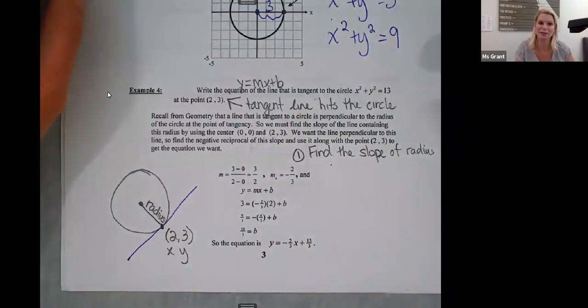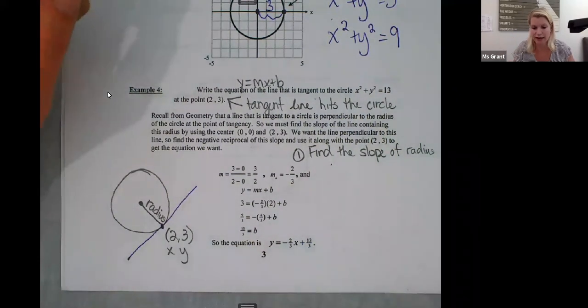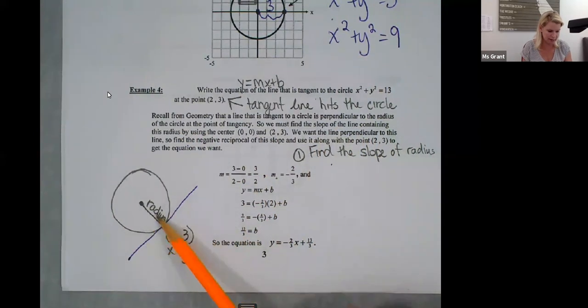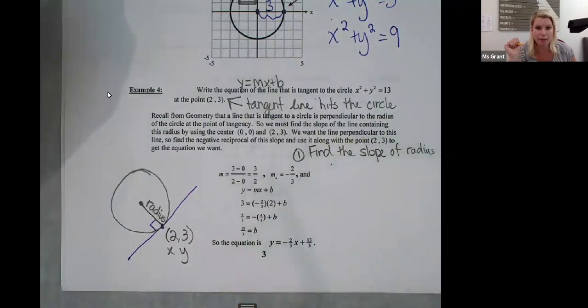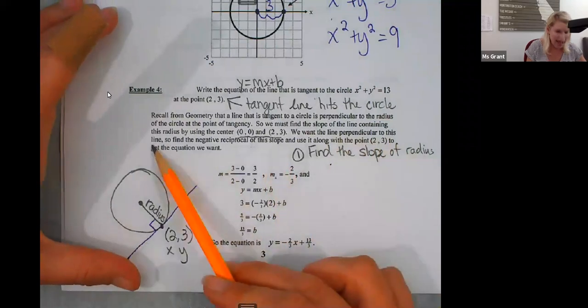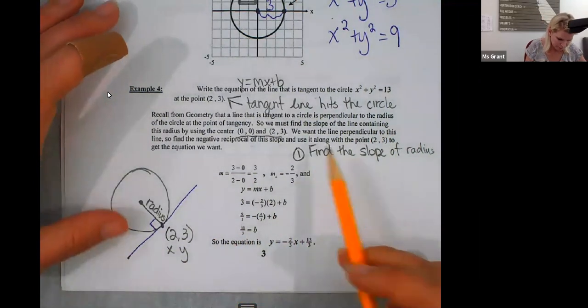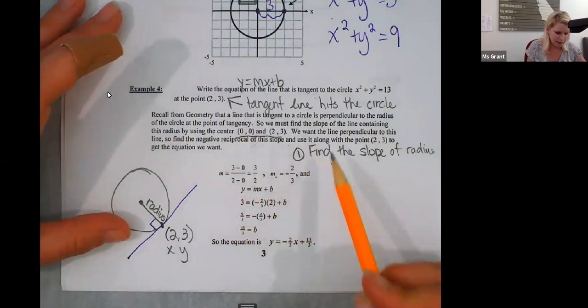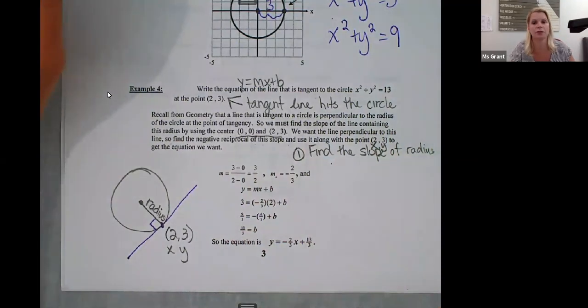And the slope of the radius. Okay. Let me read the rest of the instructions to you because I know what to do. But it just occurred to me that I have not finished reading the instructions, which is always horrible in math. Read the instructions. Read the instructions. Find out what is it asking me to do. Recall from geometry that a line is tangent to a circle. It's perpendicular to the radius. Here it is. Radius. Purple tangent line. Perpendicular. Purple. Just kidding. Purple. Perpendicular. So we must find the slope of the line containing the radius using 0, 0 and 2, 3. So first I'm going to find the slope. We want the line perpendicular to this line. I want to know that Y equals MX plus B of the purple line. So the slope of the radius. Step one. Then we want the line perpendicular to this line. So find the negative reciprocal of this slope. Negative reciprocal means perpendicular slope. And use it along with the point 2 comma 3. I think that paragraph right there was extremely confusing. So I'm going to break it down for you and I'm going to go slowly through it.